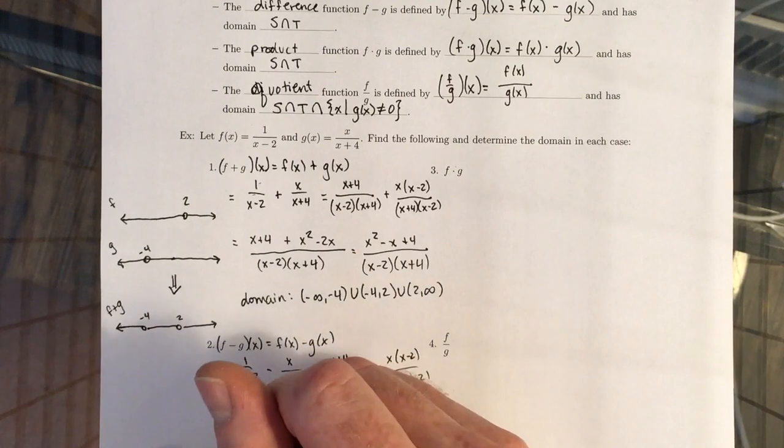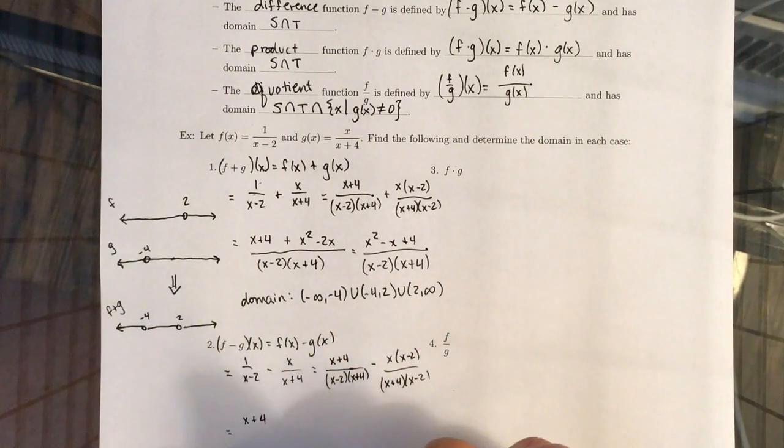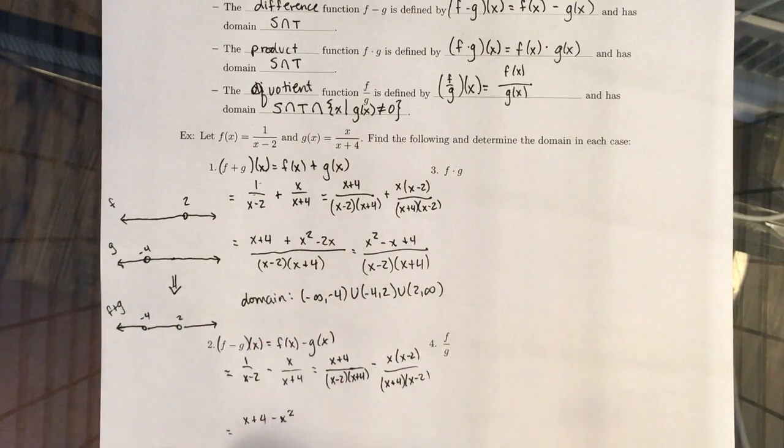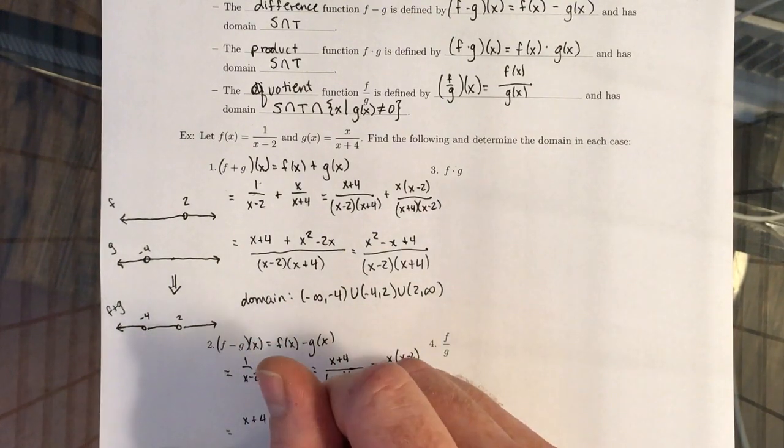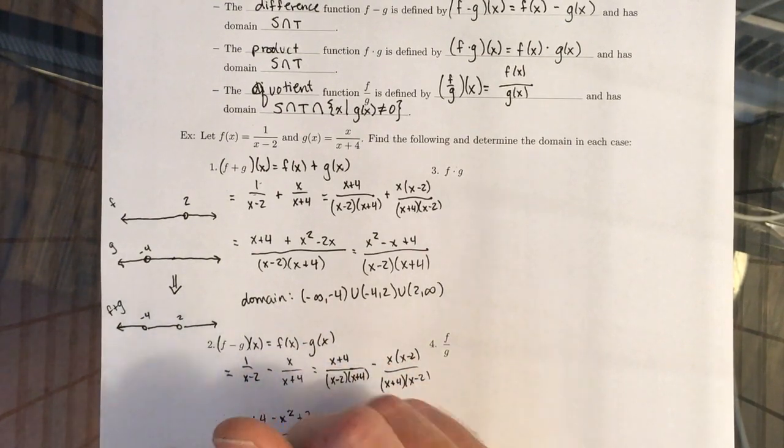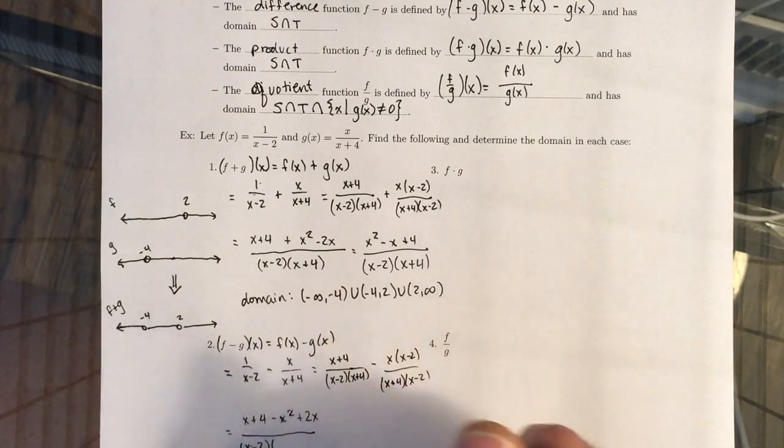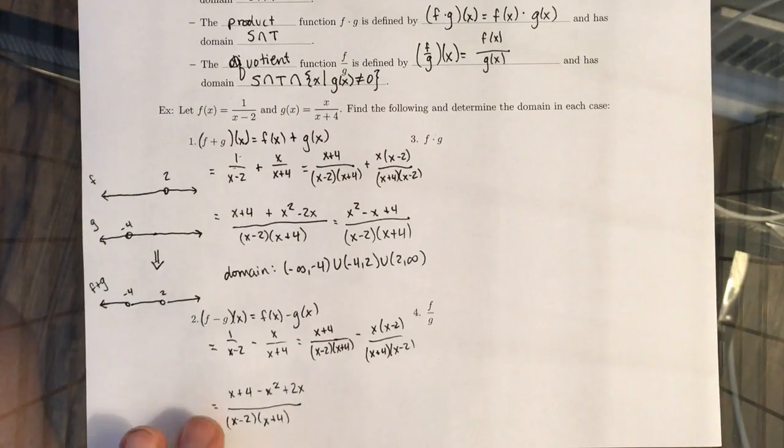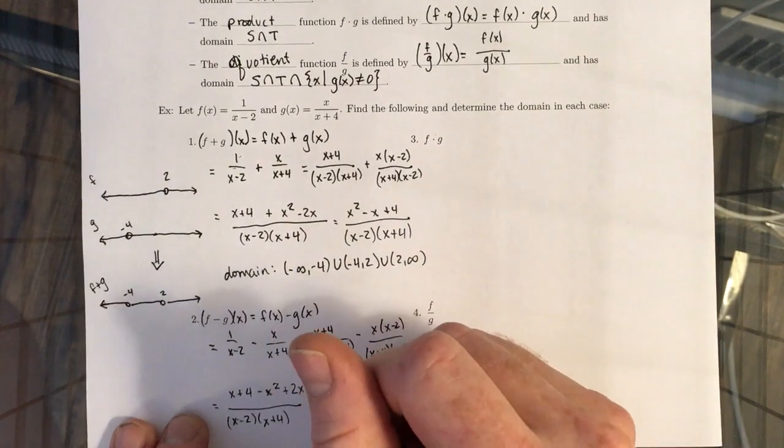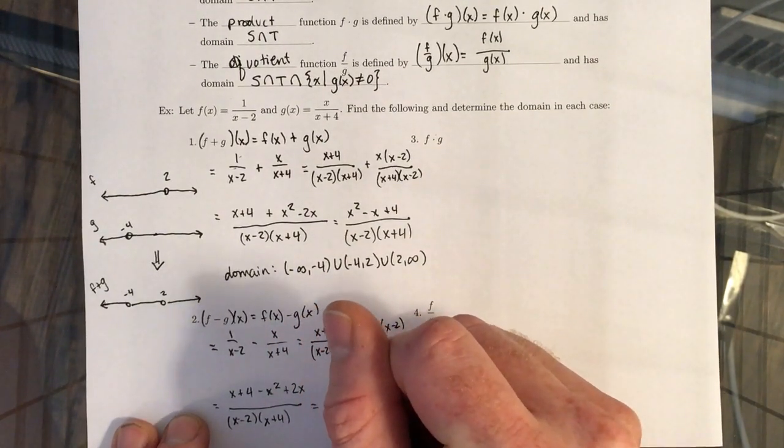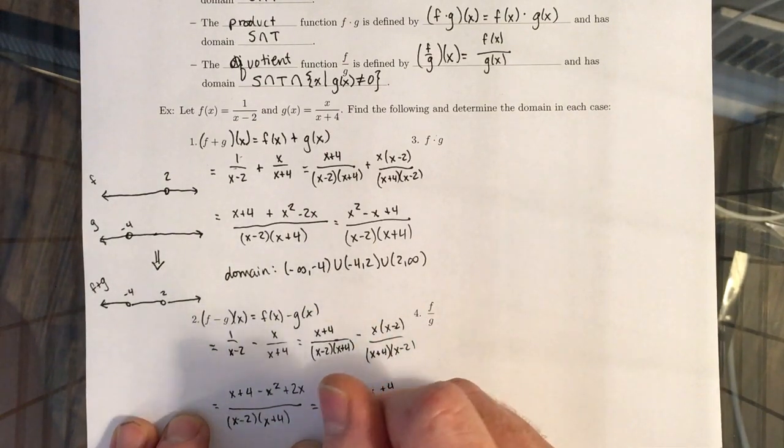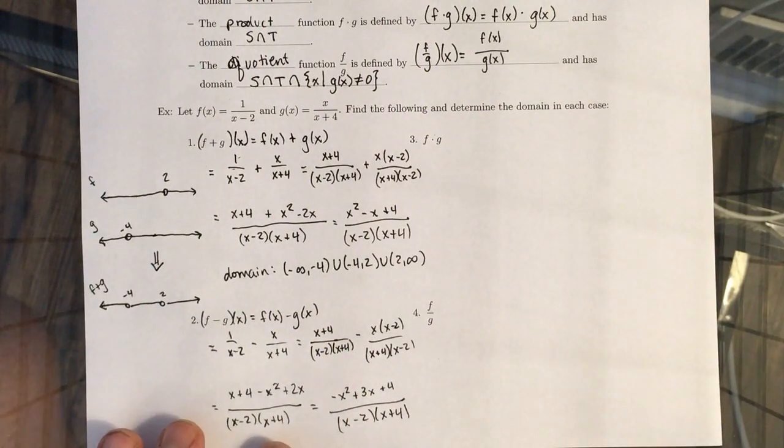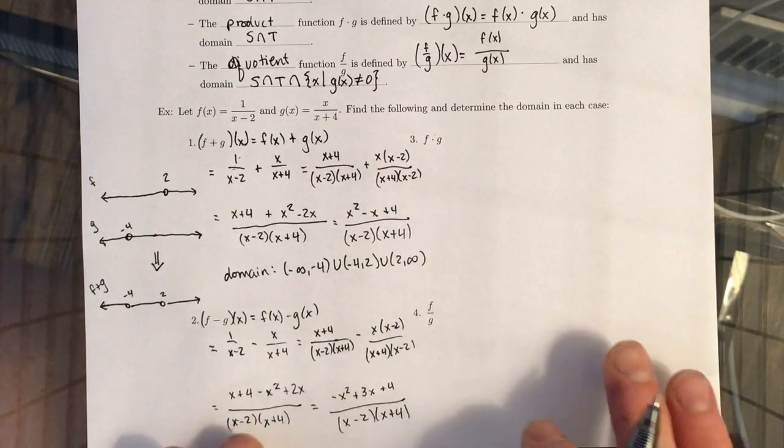Since we have common denominators, we can just combine across the numerator. Here we have x plus 4, now we have negative x times x which gives us negative x squared, then we have negative x times negative 2 which gives us plus 2x. Just be careful with your negatives if there's multiple negatives floating around. Combine like terms: we have negative x squared plus 3x plus 4, over x minus 2 times x plus 4. The domain for part 2 is the same as the domain for part 1.